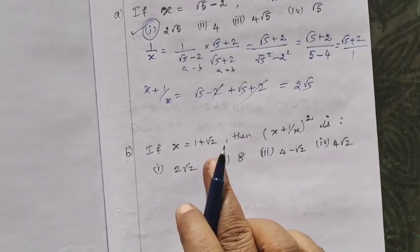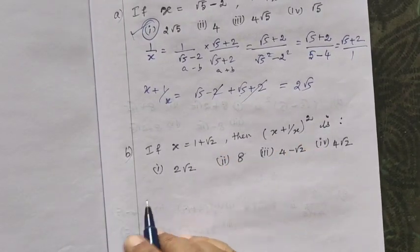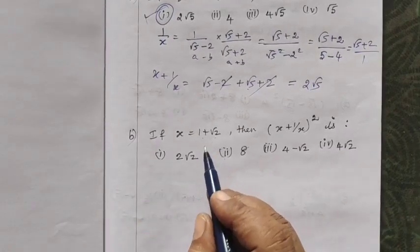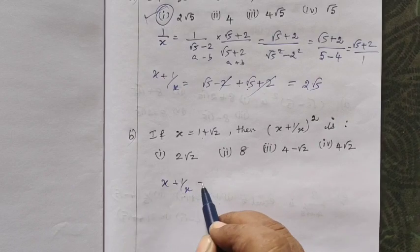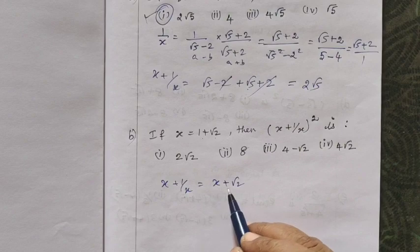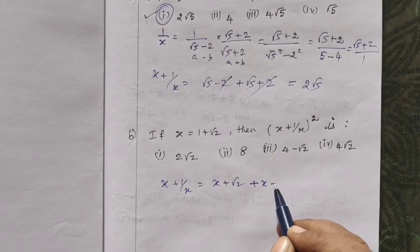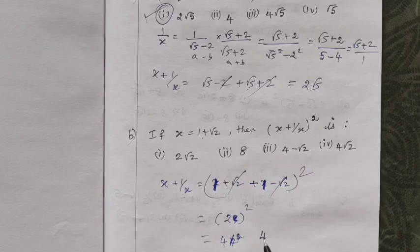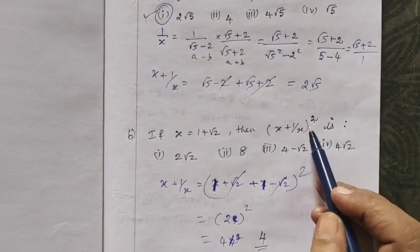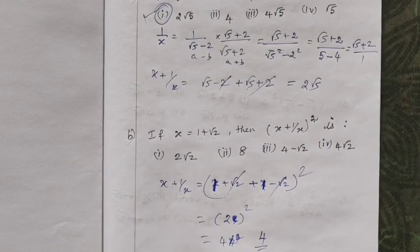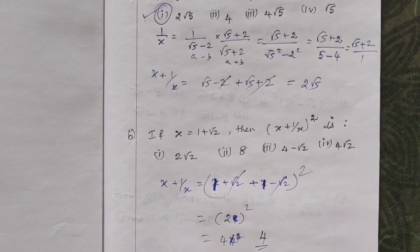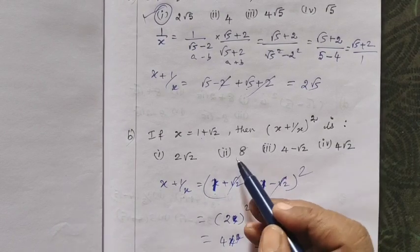If x equals 1 by (1 plus root 2), find (x plus 1 by x) whole squared. Since it is a one-step question, directly write the conjugate. So x plus 1 by x equals (1 plus root 2) plus (1 minus root 2), which equals 2. The whole squared equals 4, but that option is not given. If it is a cube, then 2 cubed equals 8. So x plus 1 by x whole cube equals 8, which is the correct answer.